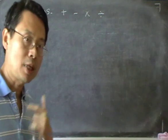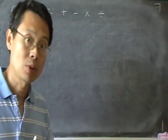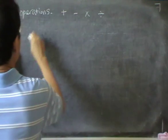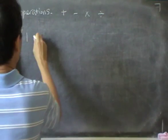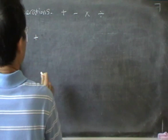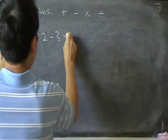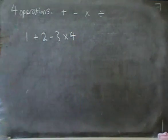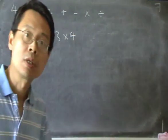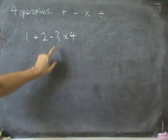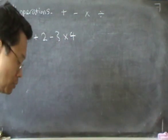I'll start with some examples using whole numbers. For example, we have a sum here that we need to do: 1 + 2 - 3 × 4.